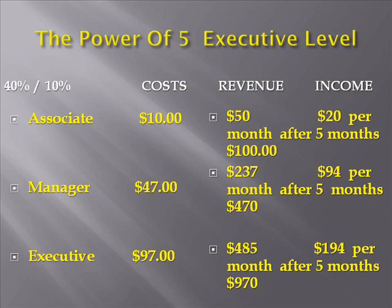Let's look at the power of five at the executive membership level. At this level you're earning forty percent commission on level one and ten percent on level two. If you recruit five associate members paying ten dollars a month, that's fifty dollars revenue; your commission is twenty dollars per month, and after five months it would be one hundred dollars. Recruit five managers at forty-seven dollars a month — that's two hundred thirty-seven dollars; your commission would be ninety-four dollars per month, totaling four hundred seventy dollars after five months. Recruit five executive members at ninety-seven dollars a month — that's four hundred eighty-five dollars; your commission would be one hundred ninety-four dollars per month, and after five months that would be nine hundred seventy dollars.